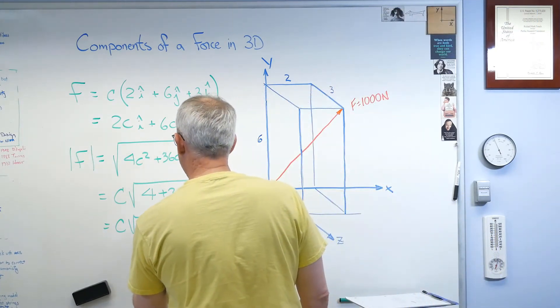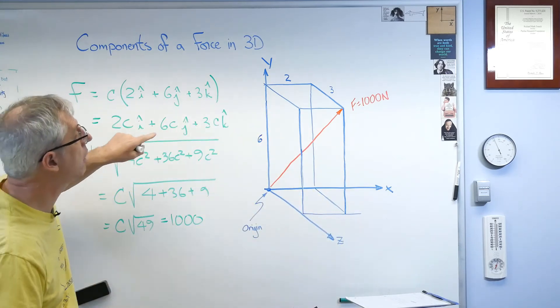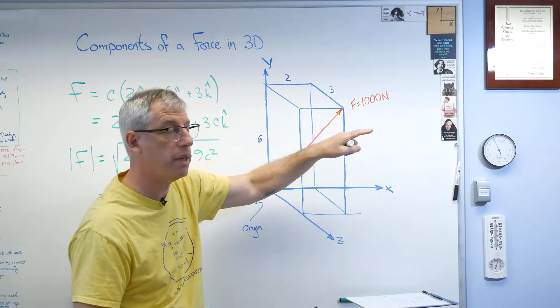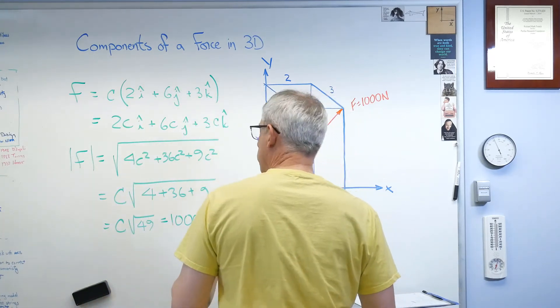All right. That's the magnitude. Well, that also happens to be 1,000 because that right there has to equal that right there. So if you've solved that for c, you get 142.857.